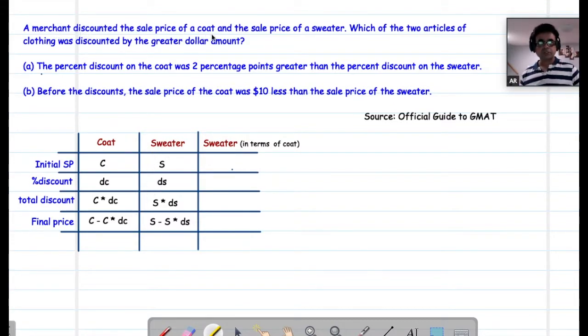A merchant discounted the sale price of a coat. So all the information of coat is here and sale price of a sweater. All the information of the sweater is in this column. So if C is the initial selling price of the coat and DC is the discount percentage, then the total discount is C multiplied by DC. And similarly in sweater, the total discount is S multiplied by DS.